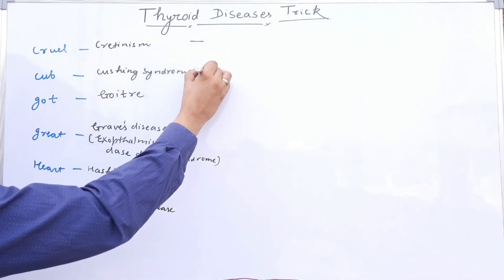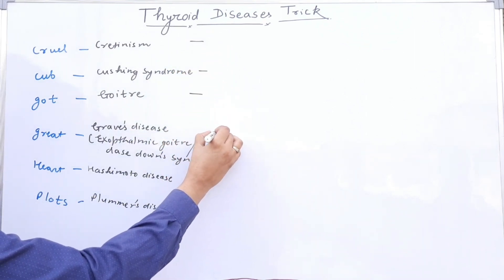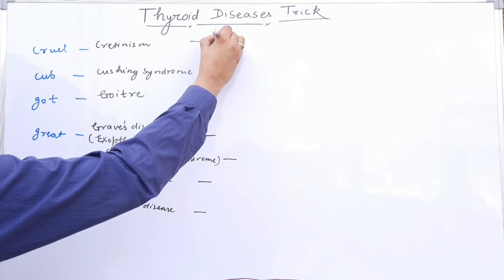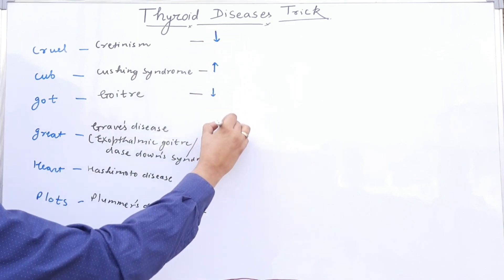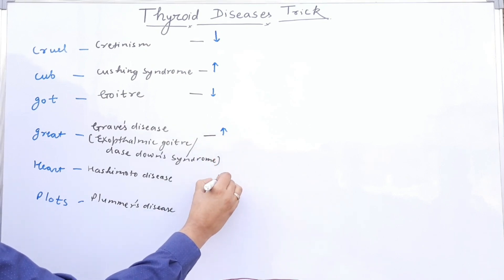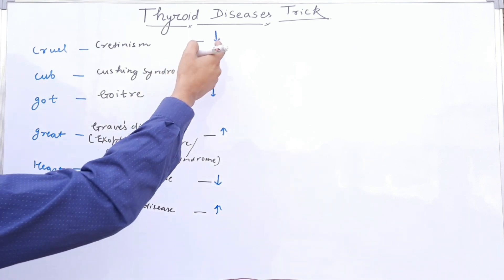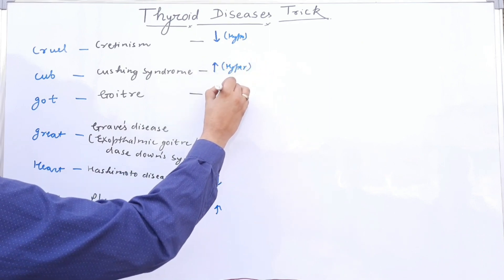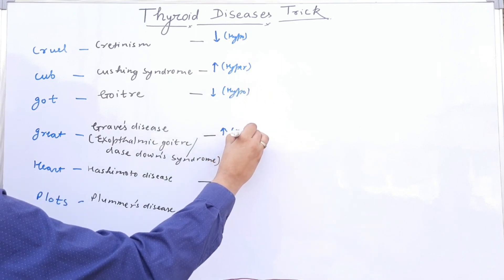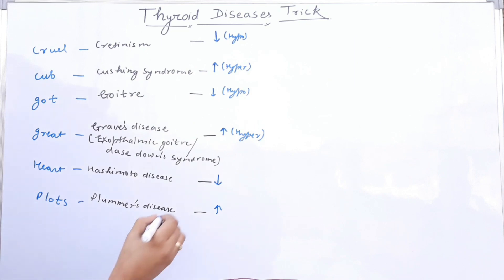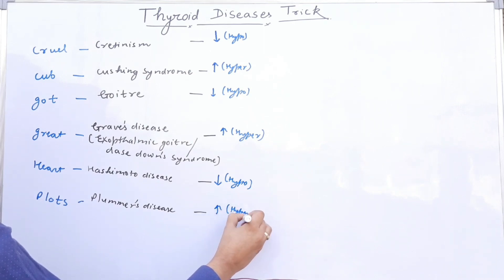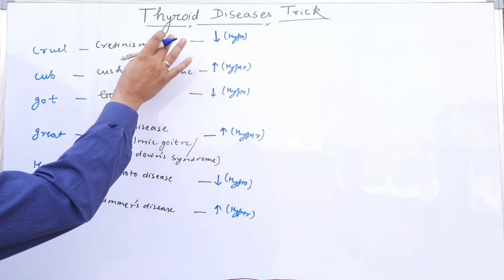Now we have a problem: how do we find out if it is hyper or hypo — meaning maximum secretion or minimum secretion? The trick is to alternate starting with hypo: hypo, hyper, hypo, hyper, hypo, hyper. We start with hypo and end with hyper. This is a very simple trick to remember.